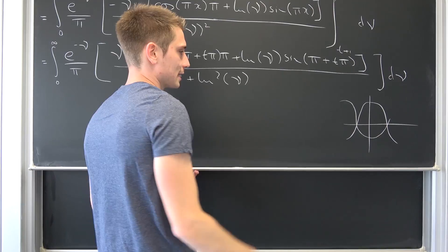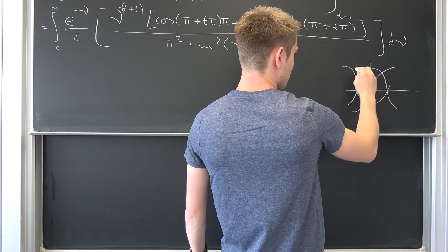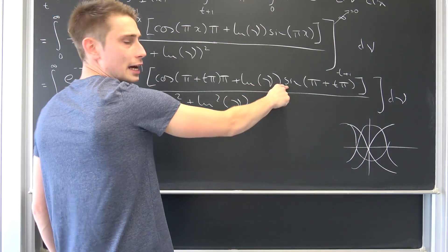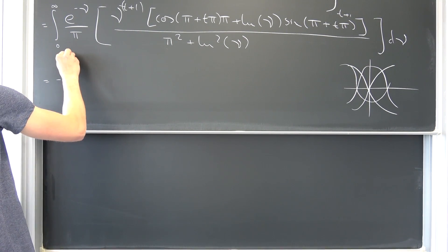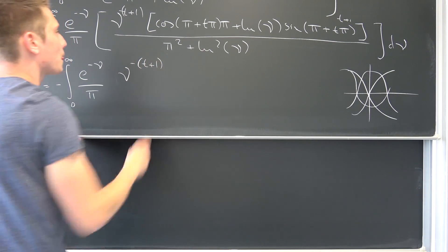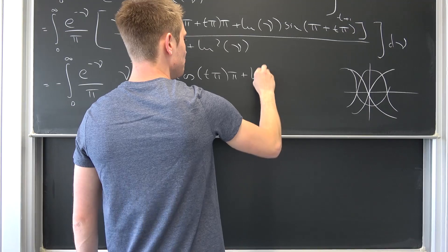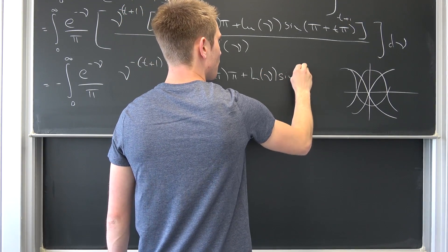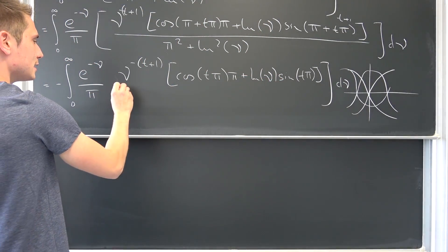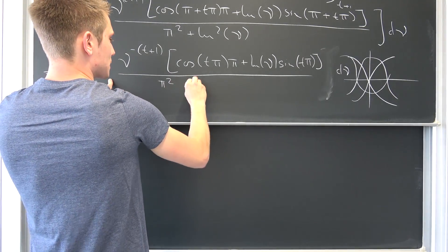Keep this in mind. Also, the sine wave shifted π to the left gives us a negative sine wave, meaning we can bring the negative to the front completely. We have a negative here and a negative here. Bringing both to the front, we get negative the integral from 0 to infinity of e to the negative μ over π times μ to the negative (t+1) power, times cosine(t·π)·π plus ln(μ)·sine(t·π), all over π² plus (ln μ)², integrated with respect to μ.